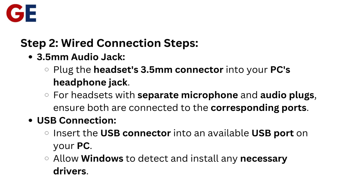Step 2: Wired connection steps. For a 3.5mm audio jack, plug the headset's 3.5mm connector into your PC's headphone jack. For headsets with separate microphone and audio plugs, ensure both are connected to the corresponding ports. For USB, insert the USB connector into an available USB port on your PC and allow Windows to detect and install any necessary drivers.